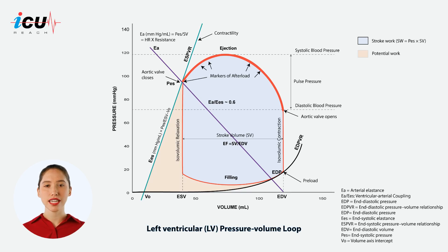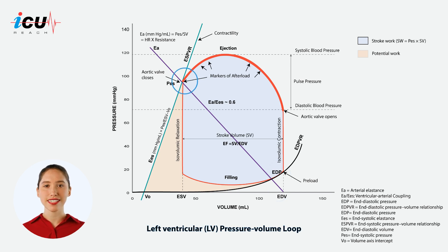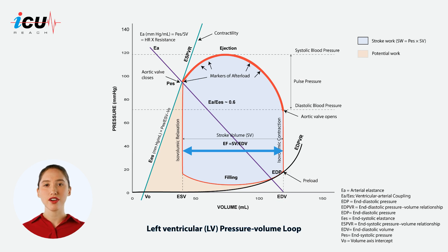Key hemodynamic information can be obtained from this loop. The end diastolic pressure and end diastolic volume are indicators of preload. The end systolic pressure is an indicator of afterload. The difference between the end diastolic volume and the end systolic volume represents the stroke volume.